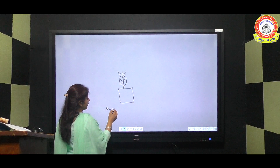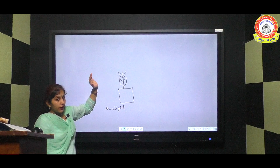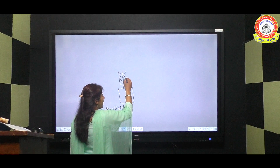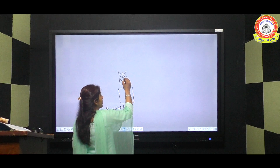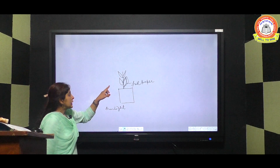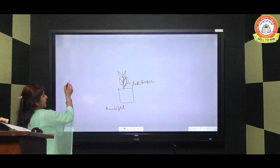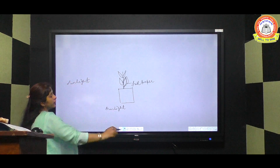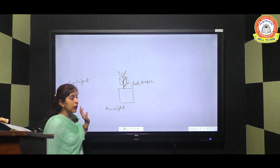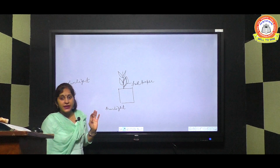We will keep the plant in sunlight, but for testing purposes, we will cover one leaf with foil paper. We are covering it with foil paper so that this leaf will not receive sunlight. Here we are discussing that if a plant does not get sunlight for photosynthesis, it will not prepare food. The other parts of the plant will receive sunlight, water, and everything else — but this covered leaf will not receive sunlight.